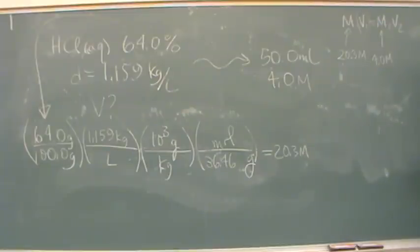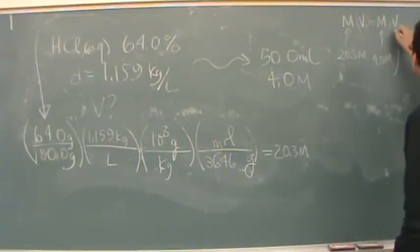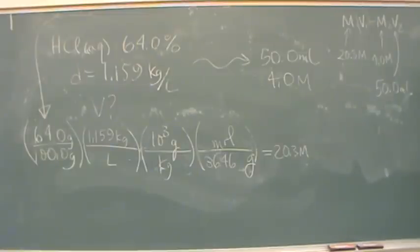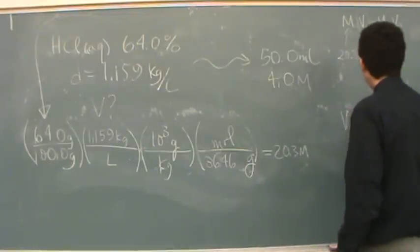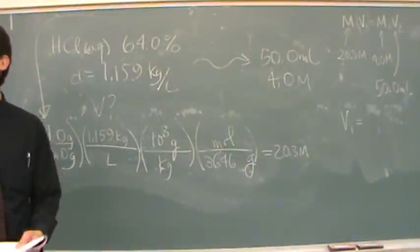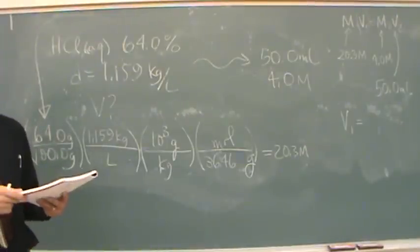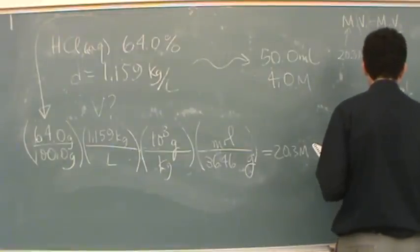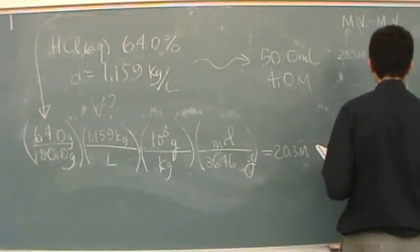And the final volume now was also given in the question. It's 50.0 milliliters. I just plug in and cross multiply to solve for the initial volume. The initial volume, because the final volume is in units of milliliters, the initial volume will be calculated out to milliliters automatically. And we get 9.83 milliliters.